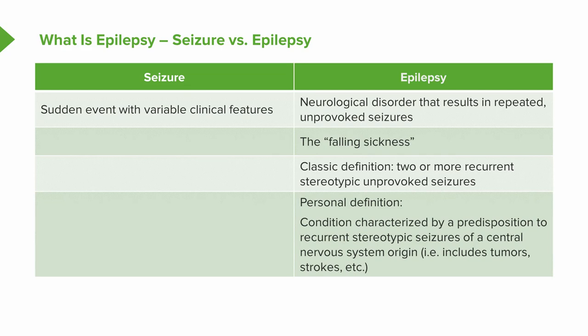A useful definition is a condition characterized by a predisposition to recurrent stereotypic seizures of central nervous system origin. This encompasses epilepsy from unprovoked causes as well as recurrent seizures from tumors, strokes, or other conditions. The key distinction: a seizure is a one-time event, whereas epilepsy involves recurrent, stereotypic seizures that come from the brain.